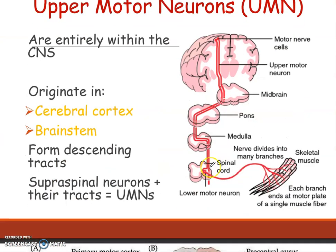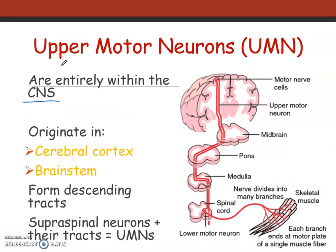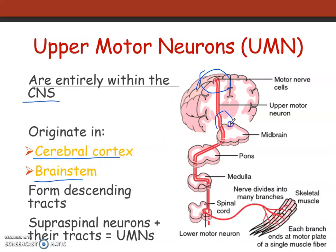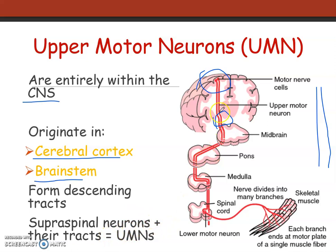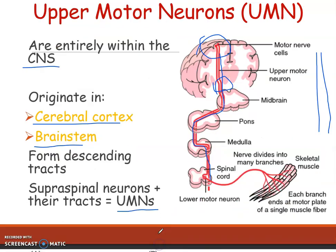Upper motor neurons are entirely within the CNS; they are not present in the peripheral nervous system. They originate in the cerebral cortex and also in the brainstem, and they form the descending tracts. These are the supraspinal neurons and their tracks, and they are collectively known as upper motor neurons.